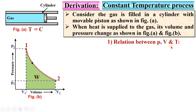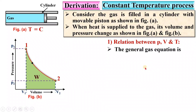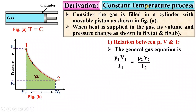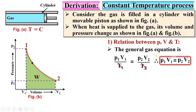The first topic is the relation between pressure, volume and temperature for the constant temperature process. The general gas equation is PV/T = constant, so for State 1: P1V1/T1 = P2V2/T2. Since temperature is constant, T1 = T2, and they cancel on both sides. The remaining relation is P1V1 = P2V2. This is the first result: the relation between pressure, volume and temperature during the constant temperature process.